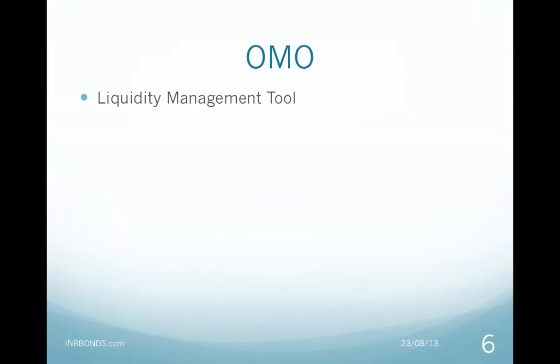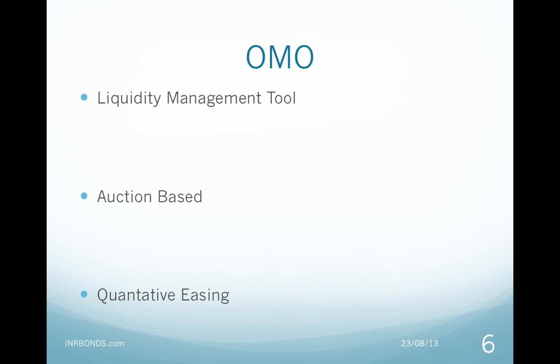OMO or Open Market Operations are liquidity-sucking or liquidity-infusing tools. RBI can buy bonds from the market through OMO auctions, and similarly can sell bonds it holds to the market through OMO auctions. RBI can also buy and sell bonds directly in the secondary market, but OMOs send out signals to the market on RBI's intentions. OMO purchase auctions infuse liquidity into the system while OMO sales auctions take out liquidity. RBI buying bonds through OMOs is a form of quantitative easing as primary liquidity is created as money is printed to pay for bonds.